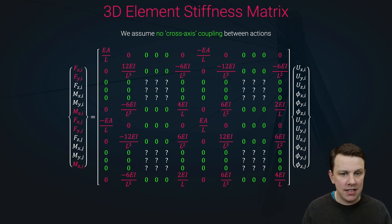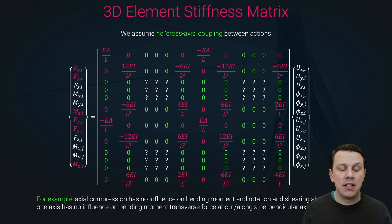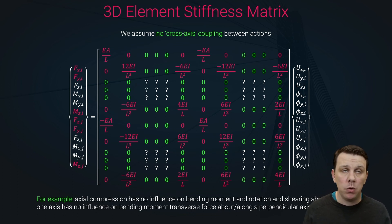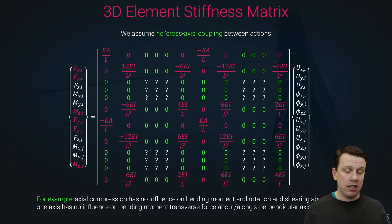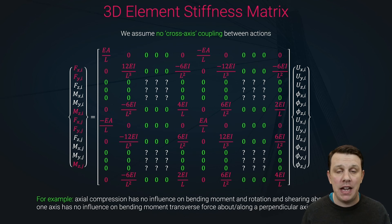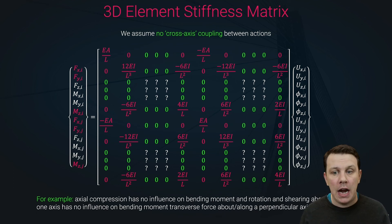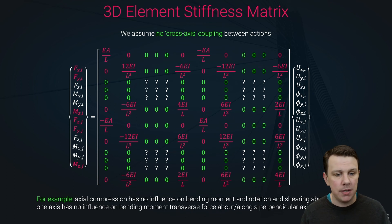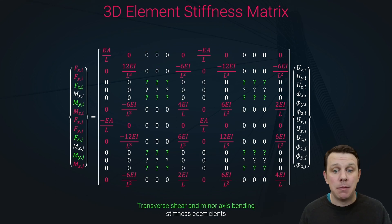There are a large number of zeros in the stiffness matrix. This means there is no cross-axis coupling between actions. For example, axial shortening of a member has no impact on bending within that member. Similarly, bending about one axis has no interaction with bending about a perpendicular axis. With a 3D element we must account for bending about both the major and minor axes, and we're assuming no coupling between them — and no coupling between axial forces and bending. That is what all those zeros throughout the stiffness matrix represent.